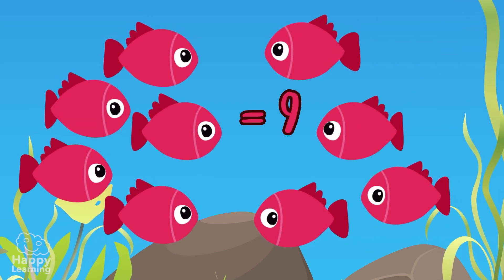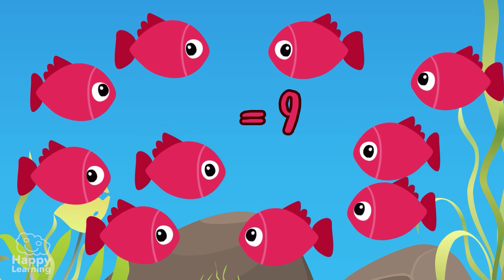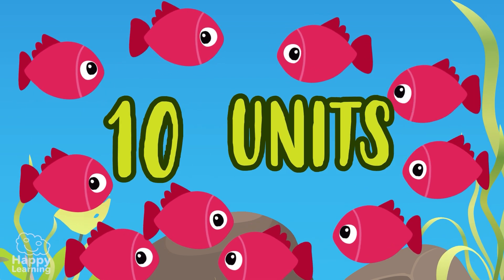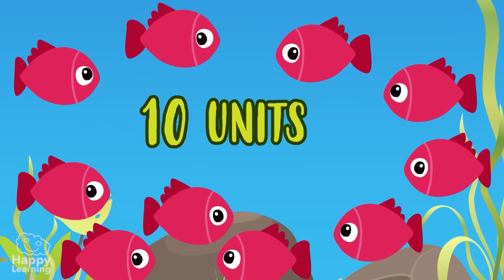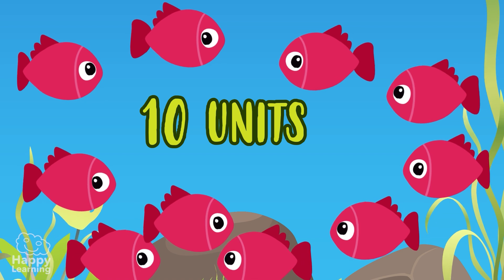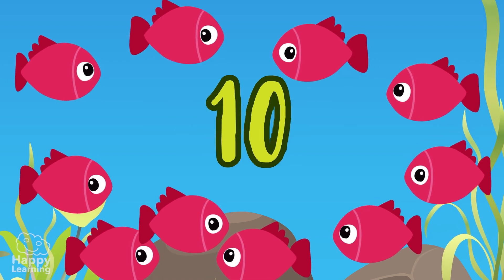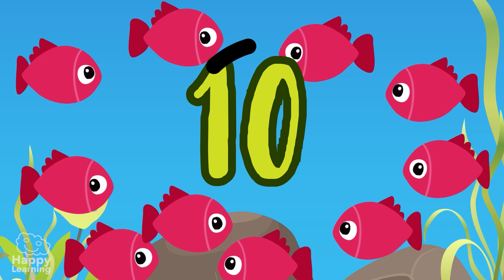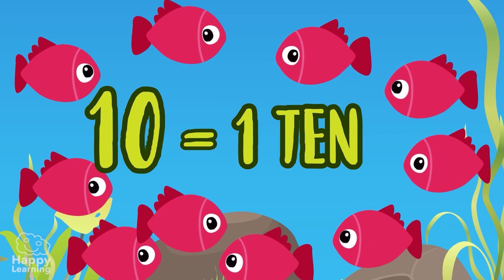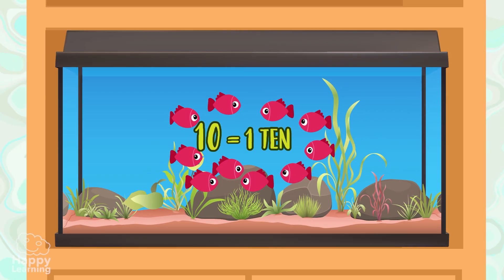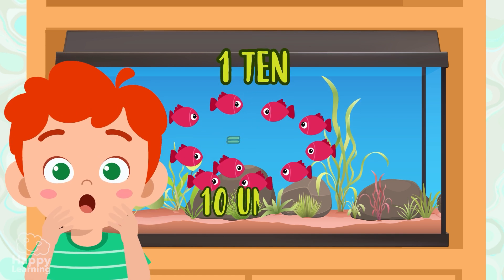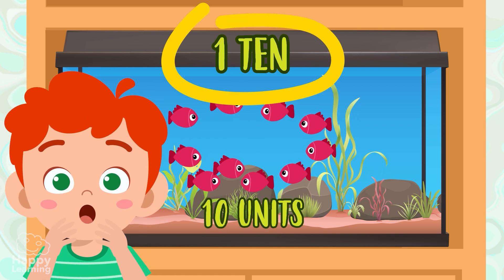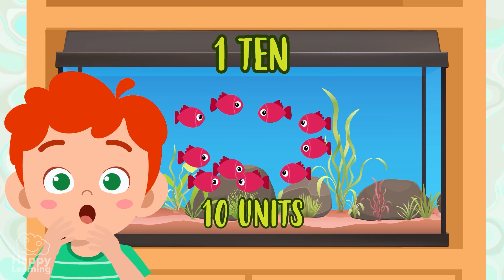Wow, so many fish! One more and we all have ten. Ten units. Do you see what happens with the number ten? We now have two digits, the one and the zero. We have a ten because ten units make a ten. Remember, a ten is a grouping of ten units.